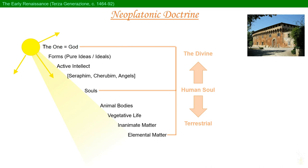Ideally, the human soul aspires to return to the One from which it emanates. This is an aspiration for knowledge, but of course the truth is reached only after death. Even so, the process of ascent can begin on earth. How? For Ficino, it's through the mediation of love and beauty. Love is the desire of beauty. Only love can guide humankind up towards God, the spring of true and perfect beauty. As noted, classical philosophy and Christianity become entirely compatible.